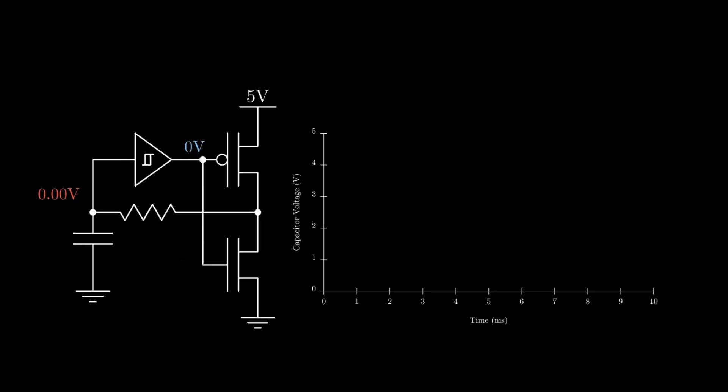The output of the Schmitt trigger is connected to the gates of the two transistors, and so it is now controlling the switching. We can see that when the capacitor voltage reaches the upper threshold, the output switches high, turning on the bottom transistor and the capacitor discharges. When the capacitor voltage reaches the lower threshold, the output switches low, turning on the top transistor and the capacitor charges up again. We finally have our nice clean clock signal and we can precisely calculate the frequency of the clock using the time constant of the RC circuit and the upper and lower threshold voltages of the Schmitt trigger.